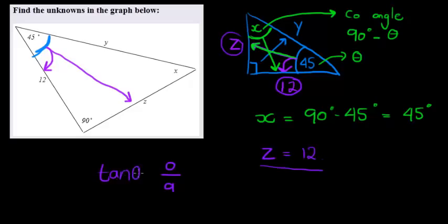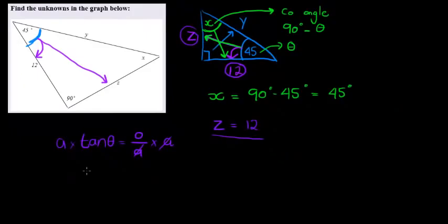So Z is opposite and we have the adjacent. So opposite and adjacent. Opposite over adjacent. Which ratio is that? Well, that is tan. Tan of theta is opposite over adjacent.